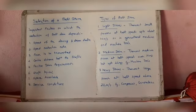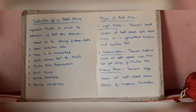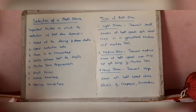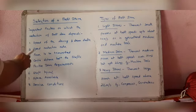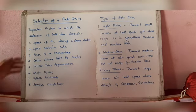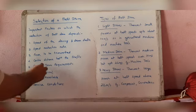Next is the selection of a belt drive. These are the most important factors on which the selection depends. First, the speed of the driving and driven shaft — which type of belt drive or material to select. Then the speed reduction ratio, for example reducing from 100 rpm to 50 rpm. Then the power to be transmitted — how much power is required is the main criteria.